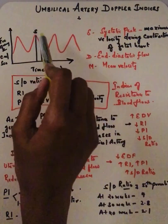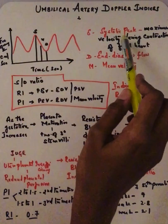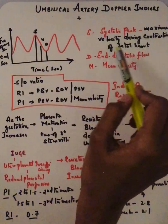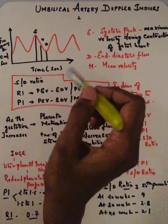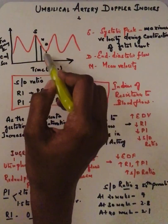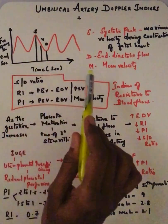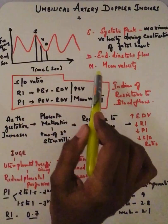First, we have to know what is S, what is D, and what is M. S is the systolic peak—the maximum velocity during contraction of the fetal heart. D is the end-diastolic flow. Normally in the umbilical artery there is blood flow from fetus to placenta, it's a forward flow.